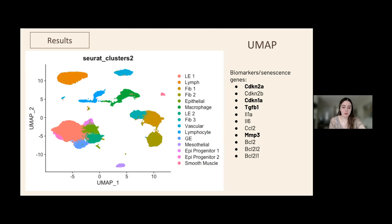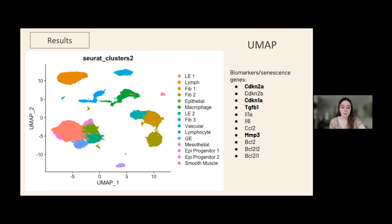This is the UMAP produced using RStudio. It consists of 20 samples by 20,000 genes and condenses all of that data into two axes, displaying patterns within the types of tissues and which cells were present in those tissues, retaining some but not all of the data. I chose to focus on four biomarkers known to be connected to senescence: CDKN2A, CDKN1A, TGFB1, and MMP3, because of the variety of ways they illustrate how the feature plots derived from the UMAP connect to the violin plots.